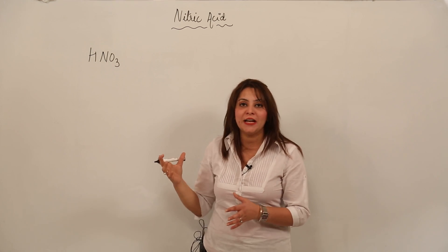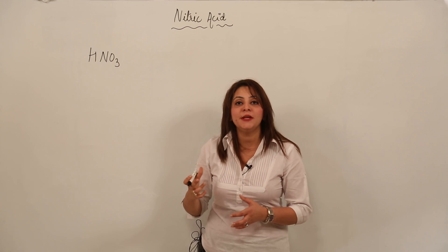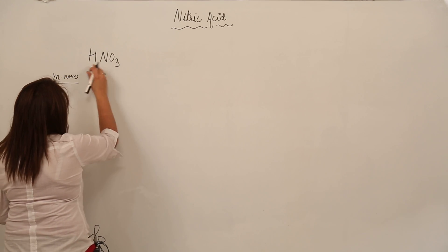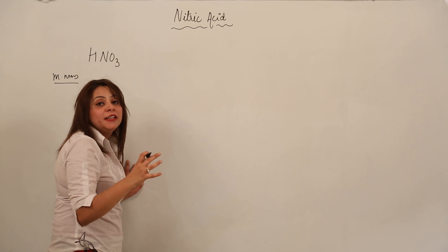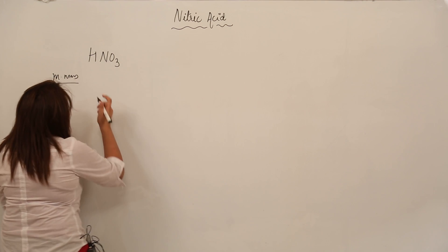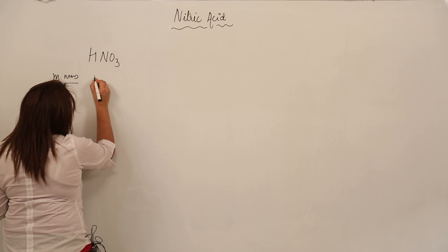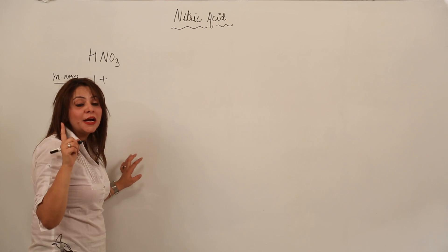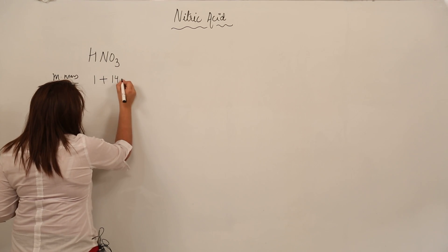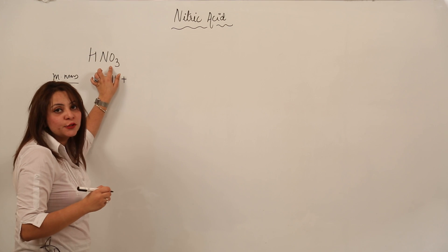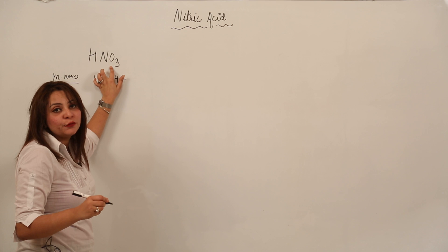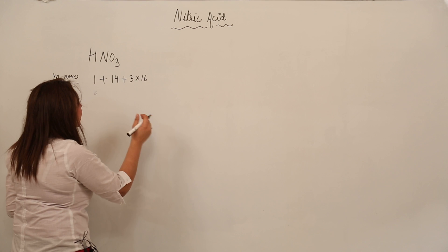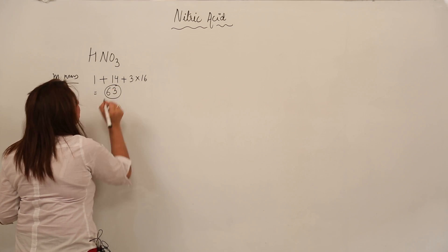Now let us calculate the molecular mass of HNO3. We add the atomic masses according to the number of atoms present. There is one hydrogen atom with mass 1, one nitrogen atom with mass 14, and three oxygen atoms, so 3 × 16 = 48. Adding these gives us 63.